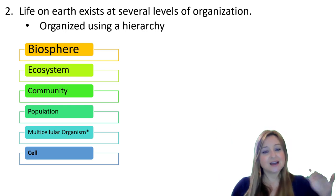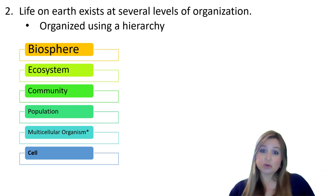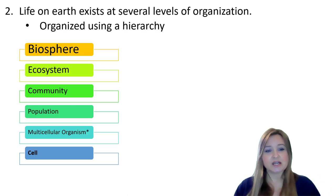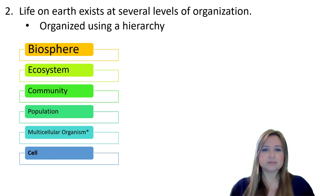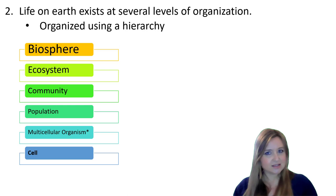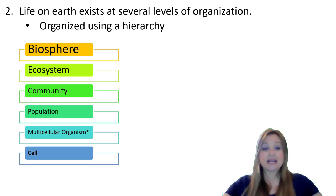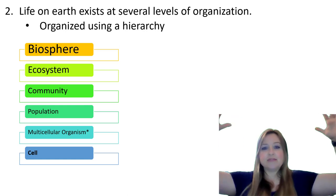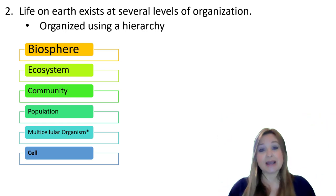These are the levels of the hierarchy of life. We have the cell, which is the lowest level, and cells can come together to form multicellular organisms — though remember, there are unicellular organisms too, and not all living things are multicellular. The next level is called the population, then the community, then the ecosystem, and then the biosphere, which includes all the levels below it.